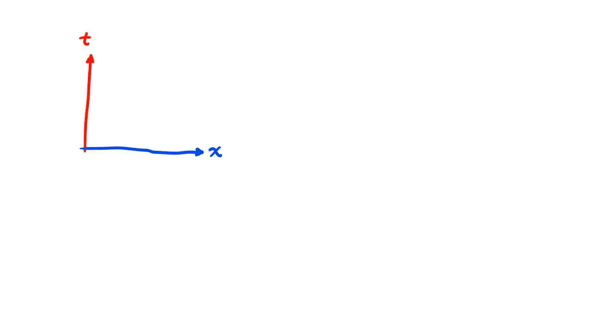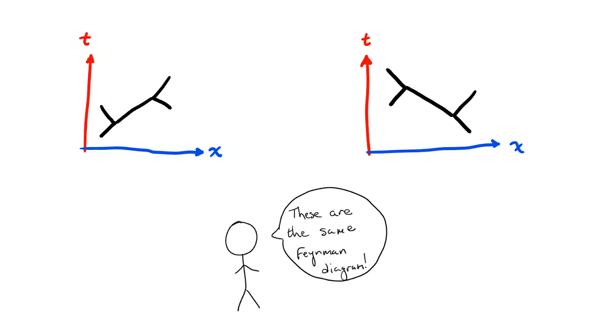So, if two Feynman diagrams have the same intermediate states, but maybe shifted in time or space, then we'll still regard them as the same diagram. It's also important to know how momentum is flowing through the diagram, since momentum and energy has to be conserved at each vertex.